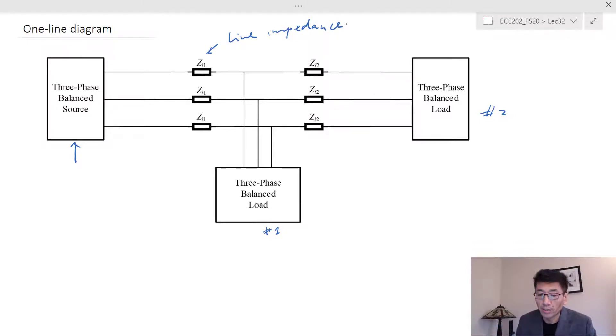This is the sort of the without simplification—you would draw the circuit in this way. If you have many many of these loads and sources, you can see this gets very complicated. We also know that for the three-phase balanced system, since all the line impedances and all the load impedances will be the same for each phase, there's really no need to draw the three lines for the three phases.